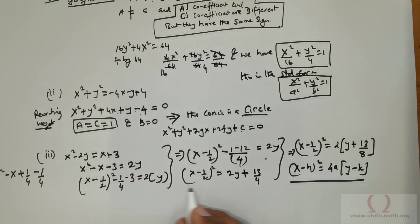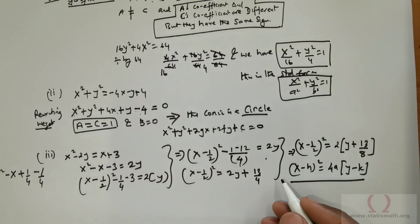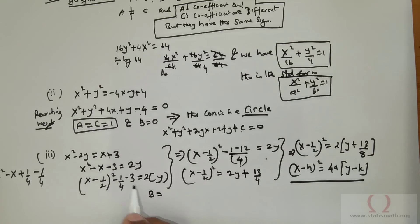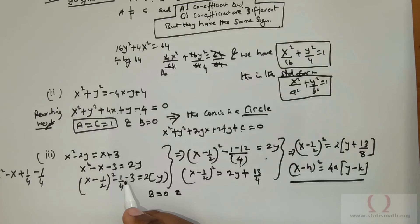Of course, we can either do like this, or we can simply locate here. Clearly, we see that b is equal to 0 here, in this question. And a or c is equal to 0.